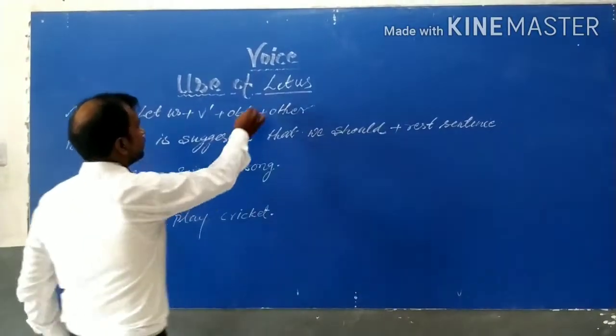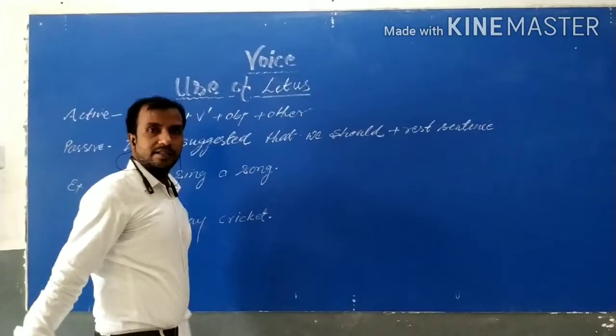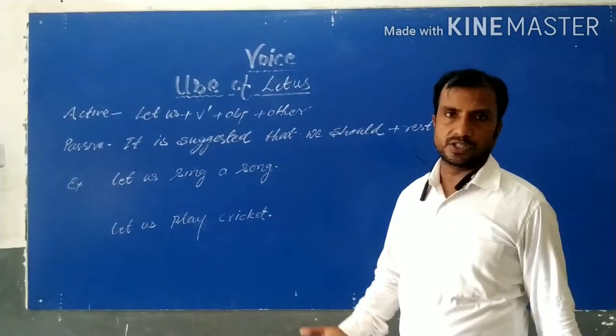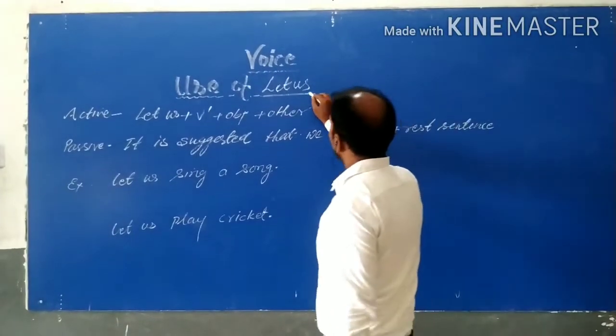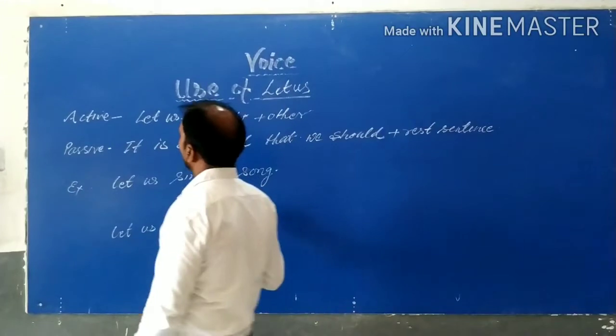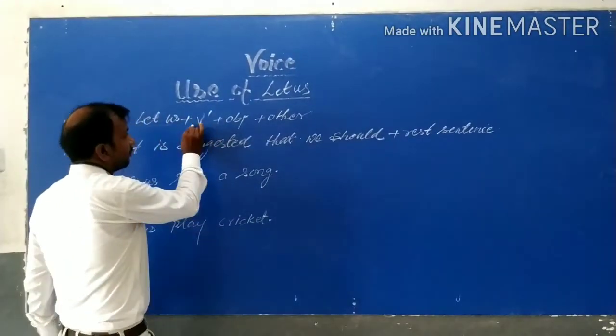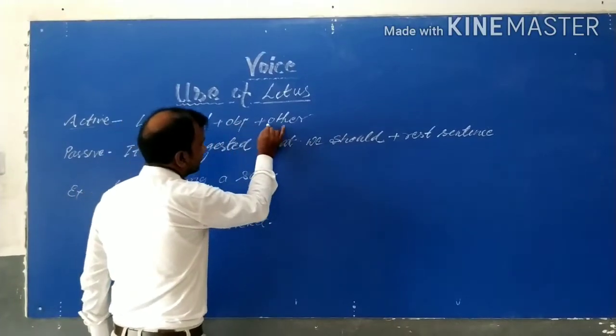Here the use of let's. Let's is used for proposal or suggestion. So if the simple structure of active voice is let's, then verb first form, object, and other. If you want to form the sentences in passive voice, then you have to follow the structure.